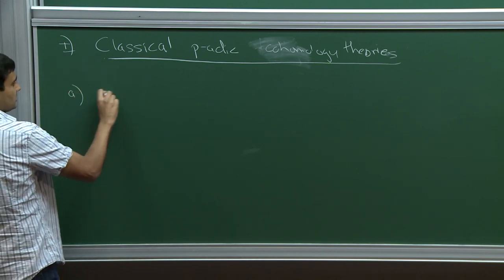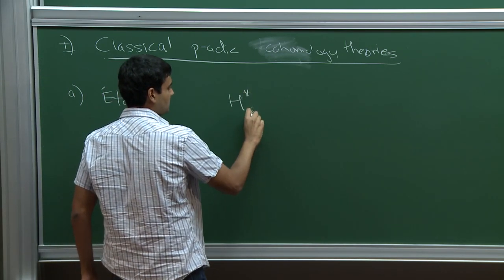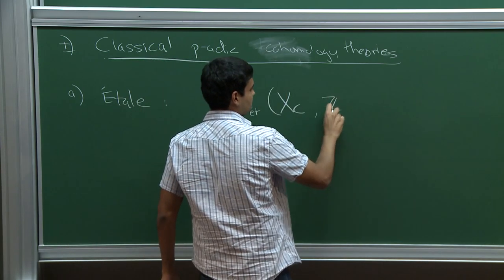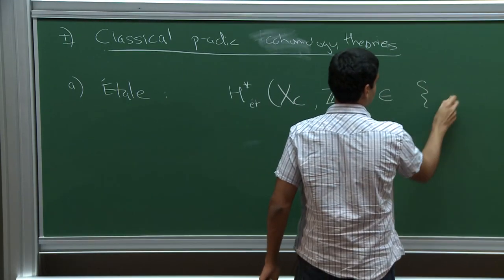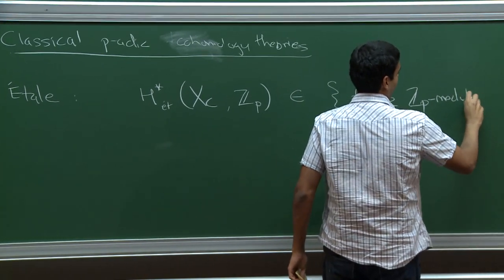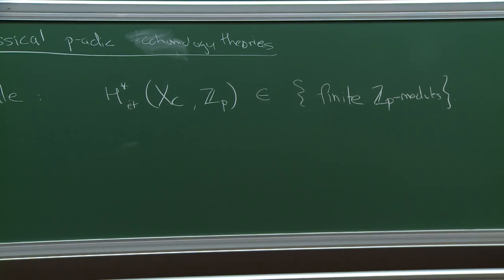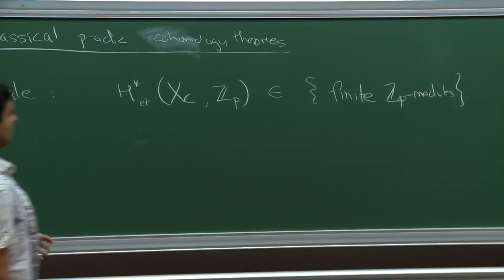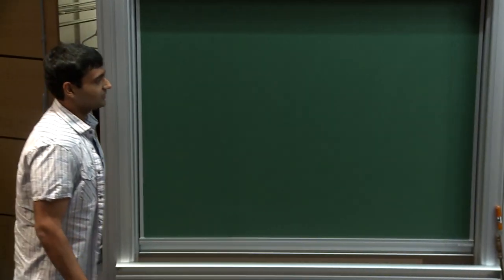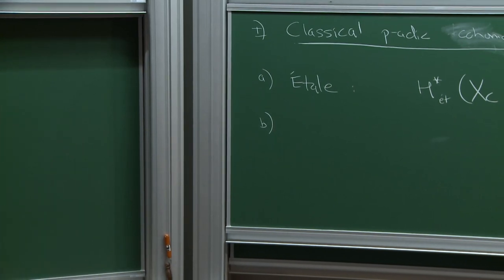The first one is étale cohomology. By this I mean the étale cohomology of the generic fiber, which we'll denote by X sub C, with coefficients in Z_p. This lives in the world of finite Z_p modules. In the algebraic case, the fact that it's finite is classical; in the formal scheme case, it's more recent. If there's a Galois action, all the constructions are going to be Galois covariant. This is a theory coming from the generic fiber.